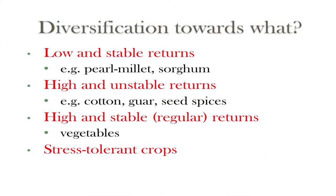The question arises: toward what kind of crops should we diversify? There are basically four sets: crops that provide low but stable returns like pearl millet, sorghum, and guar; crops that generate high but unstable returns like cotton, guar seed, or seed spices like cumin and coriander; crops with high, stable, and regular returns like vegetables; and finally, stress-tolerant crops suited to frequent extreme climate events like droughts.